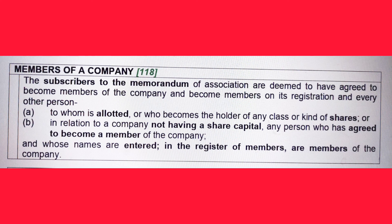That covers the first part of Section 118. Now let's move on to the other two parts mentioned in A and B. The first sentence goes on to say 'and every other person,' so we have to consider other possible situations where people can be considered as either members or shareholders. Other than the subscribers, who else can be considered as a member, a shareholder, or both?